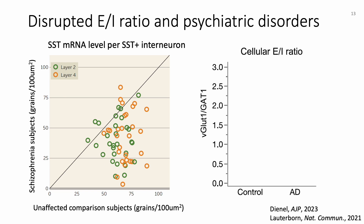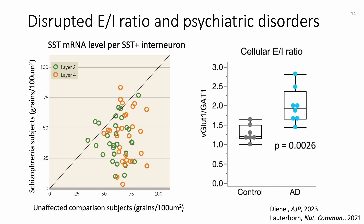Similarly, if we compare the ratio of cells expressing vesicular glutamate transporter and GABA transporter between control subjects and subjects diagnosed with Alzheimer's disease, the cellular EI ratio was significantly higher in the AD group versus controls. Overall, these results suggest an association between disrupted EI ratio and psychiatric disorders. But most of the evidence was either from invasive animal studies or post-mortem studies, making it challenging to collect data in humans on a large scale without a non-invasive approach.